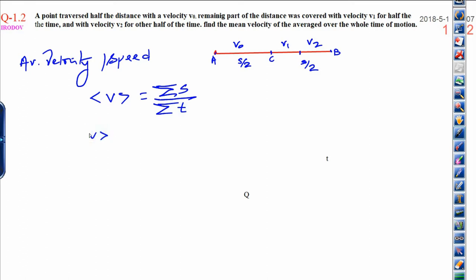Now, we can write v average is equal to total distance s divided by total time. I am just taking first half as t1 and second half as t2. Name this equation one.